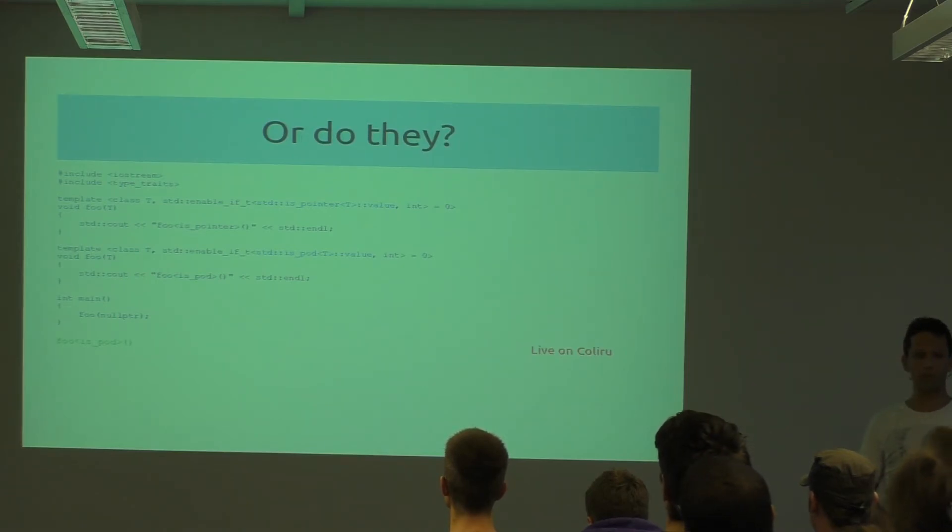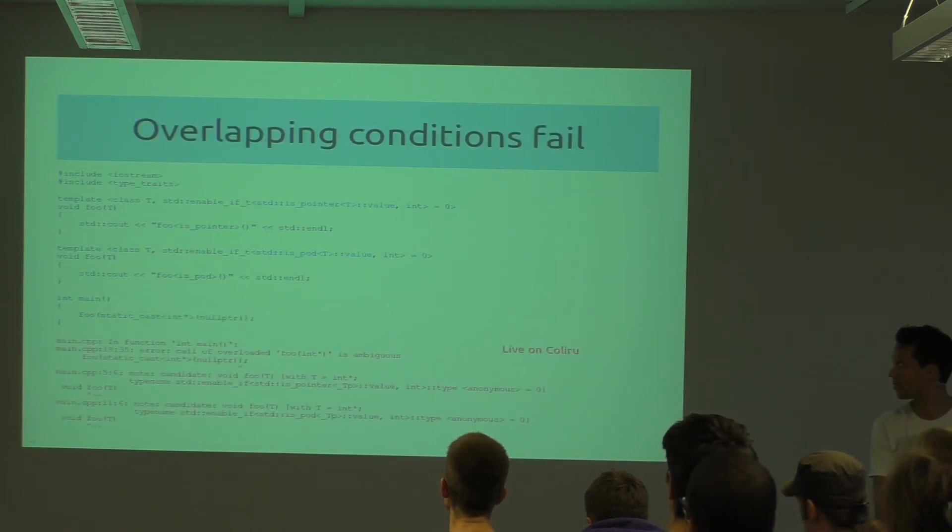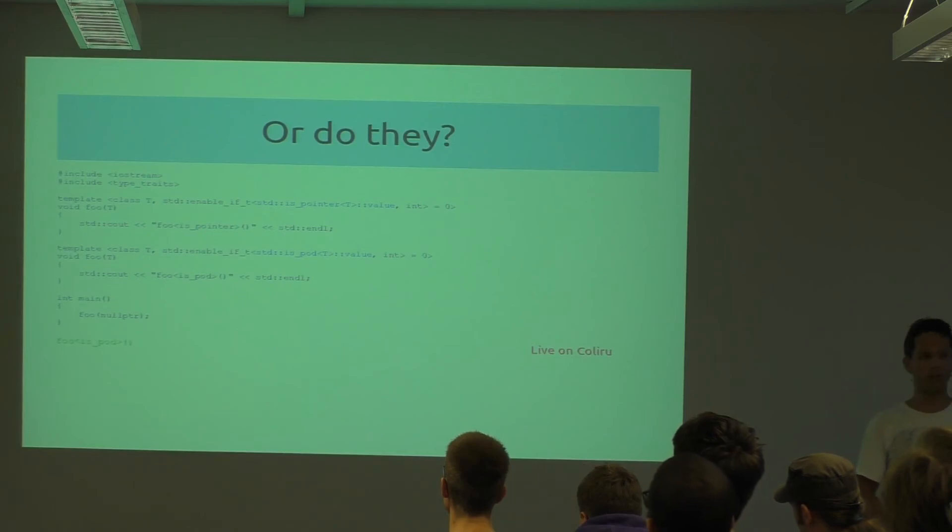Let me go back and forth. It's a different type. Look at the invocation of the foo function: here it's a null pointer static cast to int pointer; here it's only null pointer.